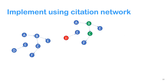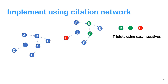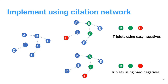We implement this using the citation network. For each training instance we have a triplet: a query paper, a positive paper, and a negative paper. Easy negatives are randomly selected papers not cited by the query. We also found that adding harder negatives improves performance — these are papers that are closer to the query but not as close as the positive. We use citation-of-a-citation, meaning two-hop documents, as hard negatives.